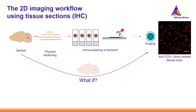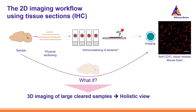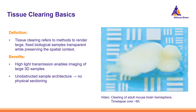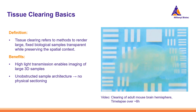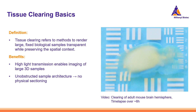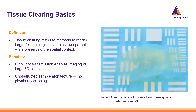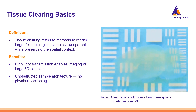Now imagine a scenario where large and complex samples can be effectively cleared and imaged, which allows for a comprehensive and detailed understanding without sacrificing vital information. Tissue clearing is a set of methods used to achieve transparency in large biological samples while maintaining the spatial context. It enhances the ability to visualize and study the samples in their entirety, with a significant increase in light transmission enabling better imaging of large 3D samples. A mouse brain hemisphere can be cleared over just 6 hours.